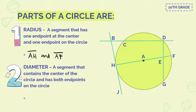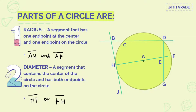Next, diameter — a segment that contains the center of the circle and has both endpoints on the circle. Both endpoints are on the circle. So the diameter here is line segment HF or line segment FH. There you go — the radius and diameter.